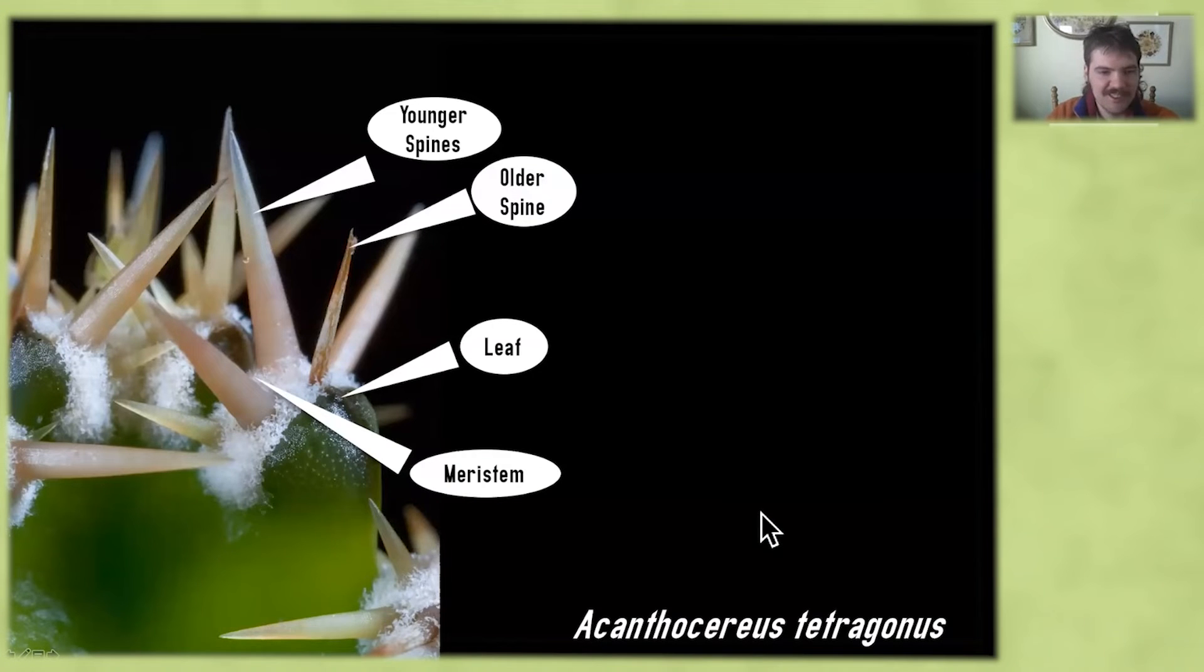So let's use this Acanthocereus areole as kind of our typical Cactoideae areole. Here we can see, believe it or not, a small little scale leaf. This is a very young areole, so it still has this leaf which might fall off later on. And then we've got this old spine just adjacent to that leaf. And then if we go further up the areole, we've got the younger spines. Let's take this areole and make a longitudinal section of it.